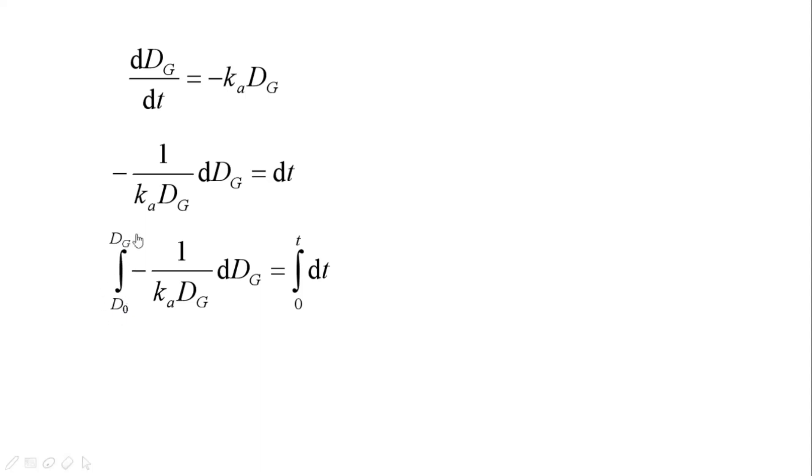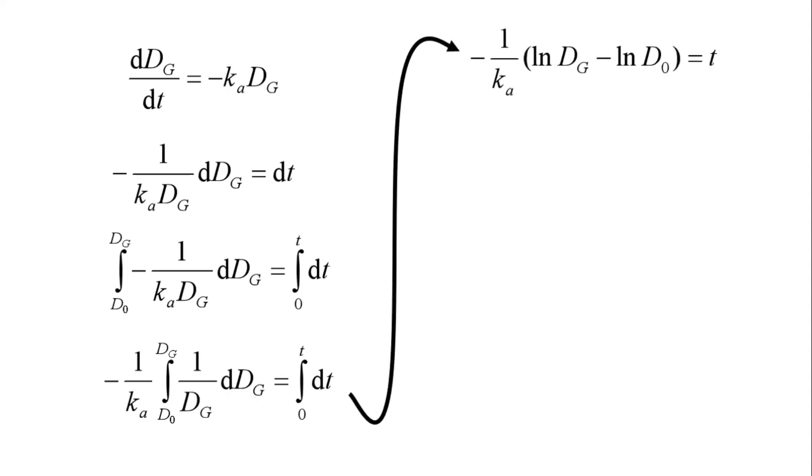Here we're integrating from D0, which is our initial drug dose, to DG, the current amount of drug in the gut. On the time side, we have integration from time T equals zero to the current time T. Negative one over KA is a constant on the left-hand side, so we can just move that out. We can integrate one over DG, and that gives us LN DG, taking our limits of integration into account. We get LN DG minus LN D0, and on the right-hand side it's just very simply T.